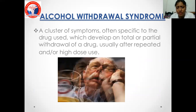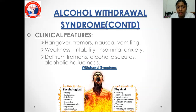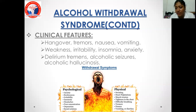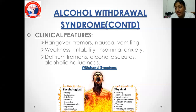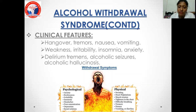Alcohol withdrawal symptoms include tremors, nausea, vomiting, weakness, irritability, insomnia, anxiety, delirium tremens, alcohol withdrawal seizures, and alcoholic hallucinosis. Timeline: within the first 6 hours — tremors, nausea, vomiting, autonomic hyperactivity with increased heart rate, temperature, and blood pressure, plus weakness, irritability, insomnia, and anxiety. Between 12 to 24 hours — alcoholic hallucinosis. Between 24 to 48 hours — alcoholic seizures. Between 48 to 72 hours — delirium tremens.